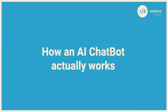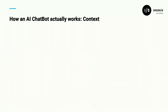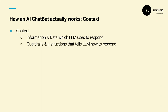A lot of people call this magic, but after this session you'll know it's actually not magic — it's computer code. Because the LLM works a bit special. Before we go into the code, let's learn one really important thing, and that is called context. In language models, context is very, very important. Context is two things: first, it's the information and data which the LLM will use to respond; but it's also guardrails and instructions that tell the LLM how to respond.